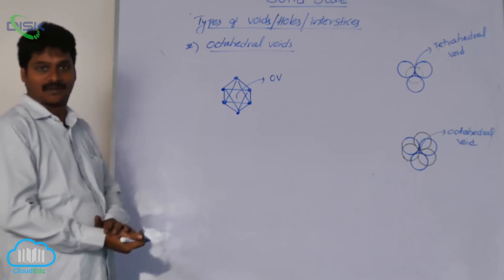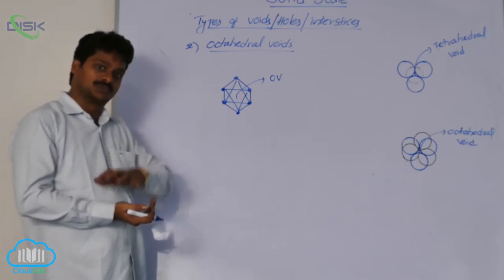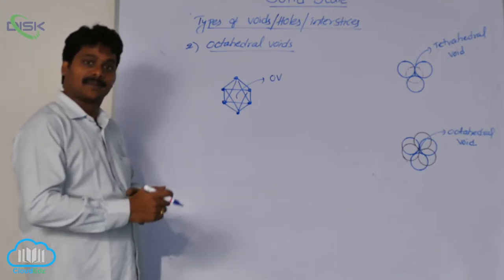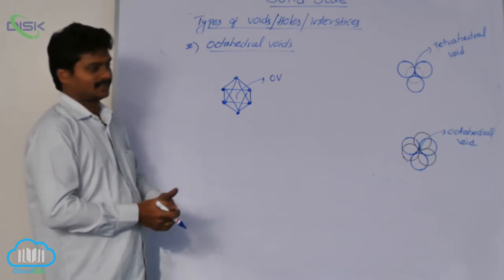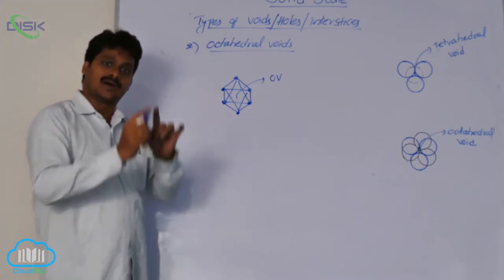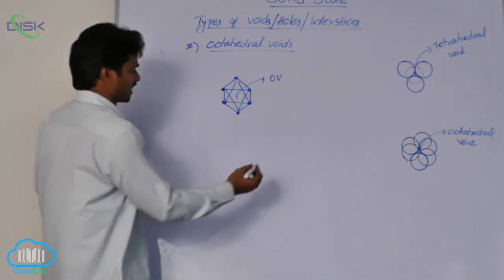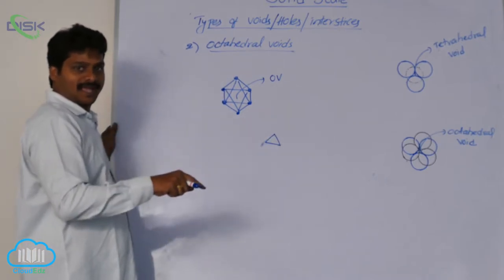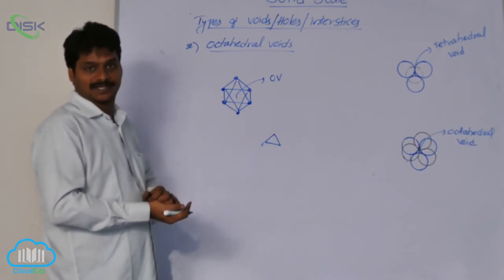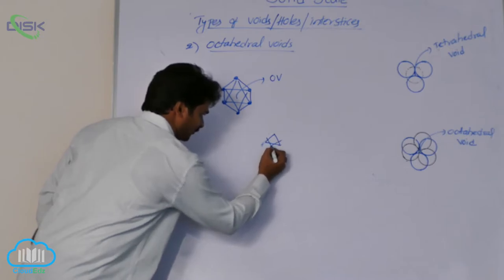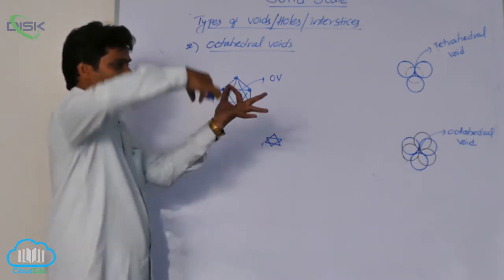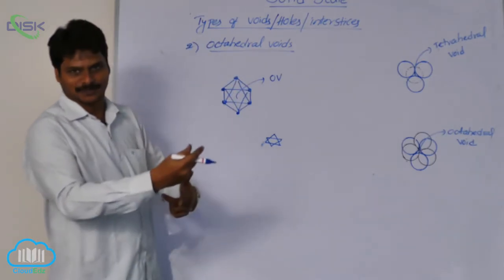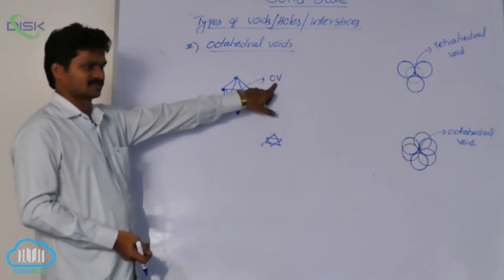An octahedral void is formed from 6 spheres — 3 from each layer. From one layer, 3 spheres form a triangular void with its vertex upward, and from the other layer, 3 spheres form a triangular void with its vertex downward. Between these 2 sets of 3 spheres, there is some empty space formed, and that empty space is called an octahedral void.